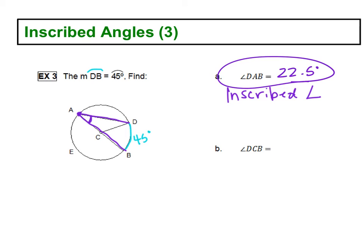Alright, then it says find the measure of angle DCB. So if I go from D to C to B, what kind of angle is this right here?